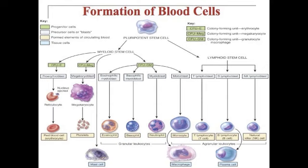The monocyte can further turn into a macrophage. On the lymphoid side of the diagram, the stem cell differentiates into T lymphocytes, B lymphocytes, and natural killer cells. The B lymphocytes can further differentiate into plasma cells.